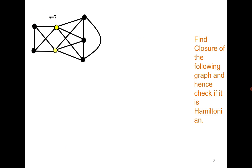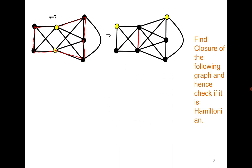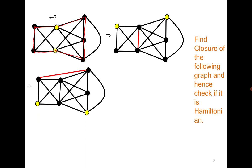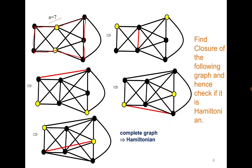Let us see one more question. You can observe that this graph is Hamiltonian because it has a Hamiltonian cycle, and as an exercise you can try to find its closure. You keep looking for non-adjacent vertices whose degree sum is greater than or equal to 7 (since n is 7 here) and keep making them adjacent. If you keep doing it, you will eventually get a complete graph, and a complete graph is Hamiltonian. Therefore, the original graph is Hamiltonian.